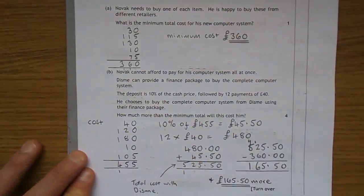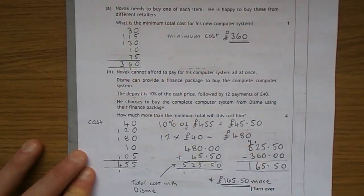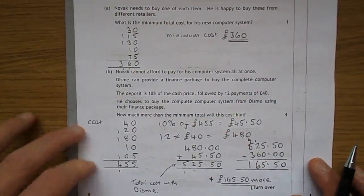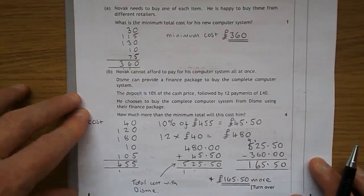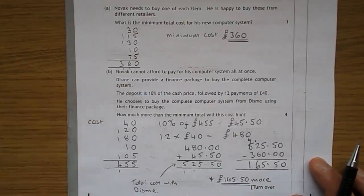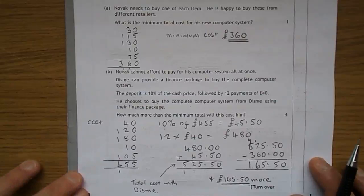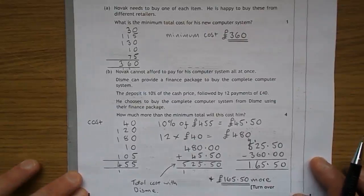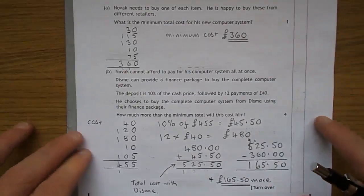Novak cannot afford to pay for his computer system all at once. Disme can provide a financial package to buy the complete computer system. The deposit is 10% of the cash price followed by 12 payments of £40. He chooses to buy the complete package from Disme using their financial package. How much more than the minimum total cost will this cost him? So it's a comparison thing at the end.